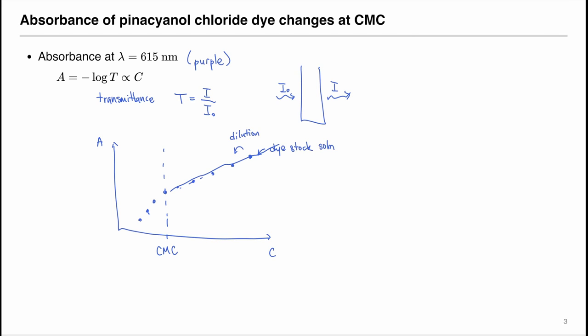So that the absorbance might decrease more steeply or less steeply. And that change in slope, at the point that it changes the slope, we can determine the critical micelle concentration. So by diluting the dye solution, we can see the change in slope and therefore determine the critical micelle concentration of the solution.